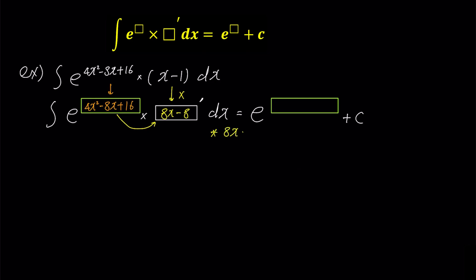It's simple. 8x minus 8 is just 8 times x minus 1. So we'll multiply by 8 over 8, which will not affect the answer. Then we'll take the 8 in the denominator out of the integral, and multiply another 8 by x minus 1 in the numerator to have 8x minus 8.